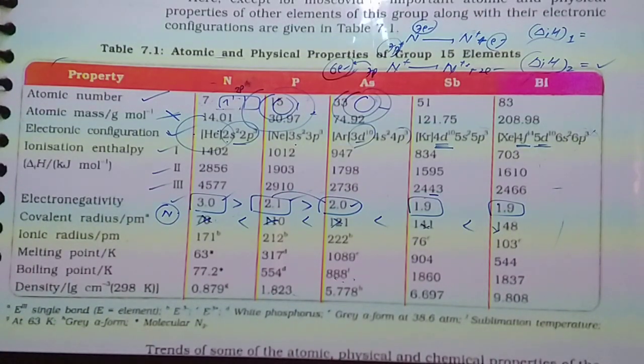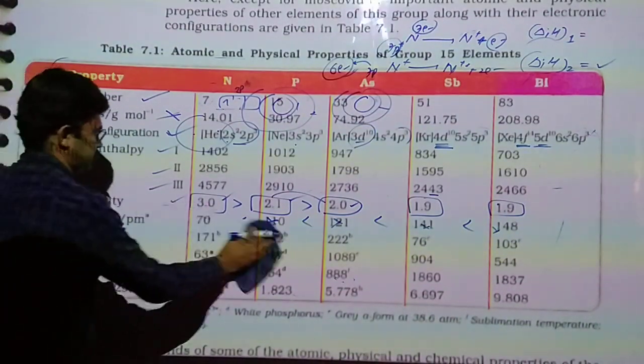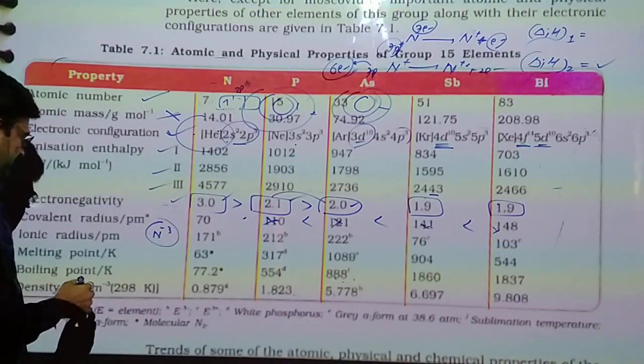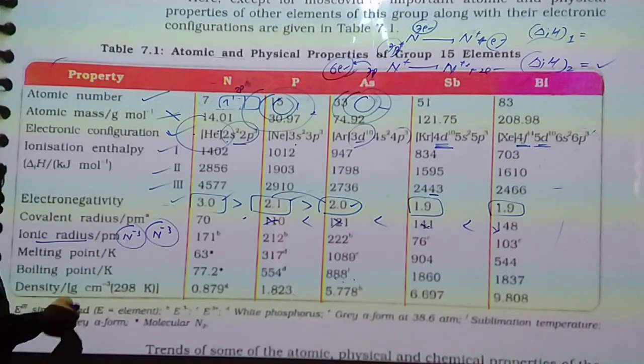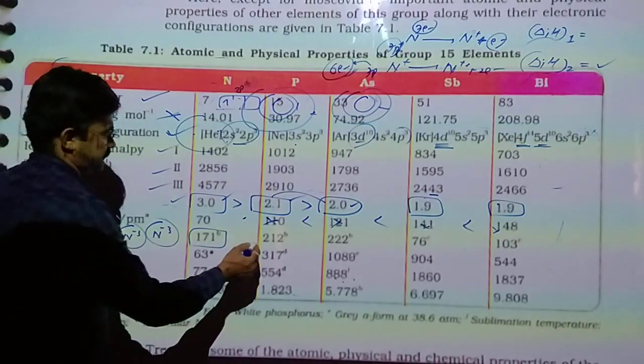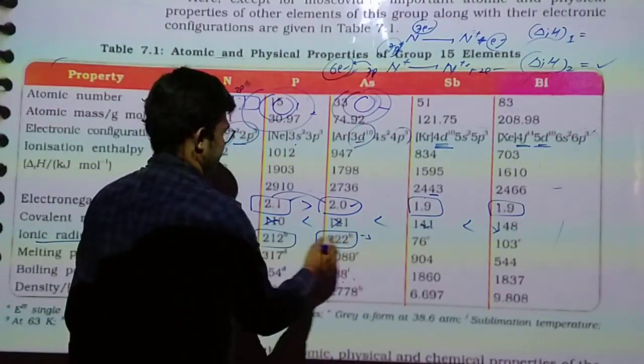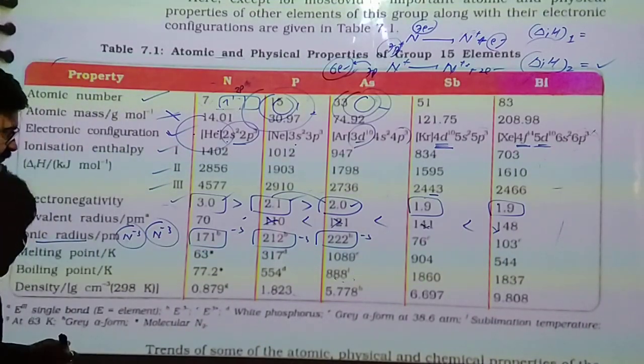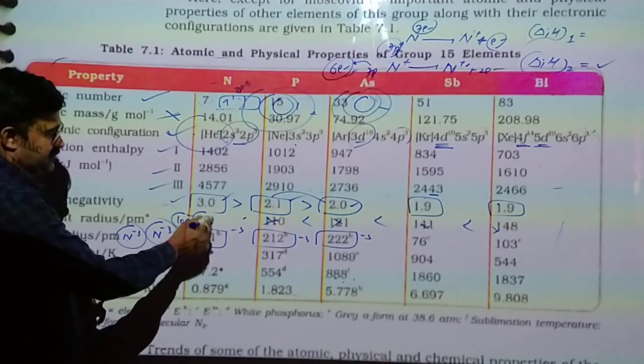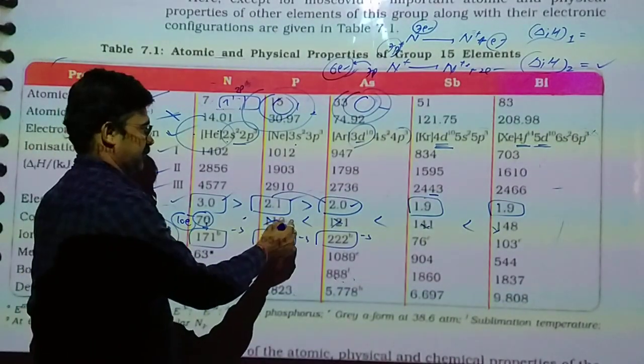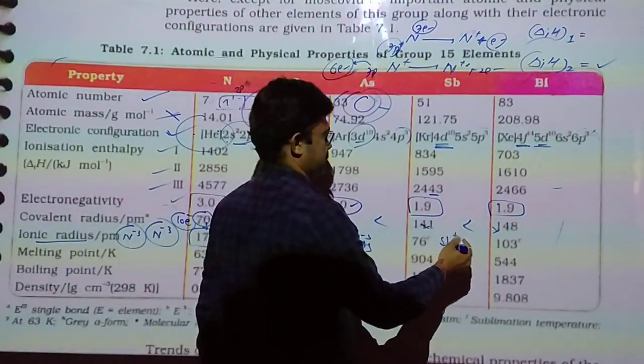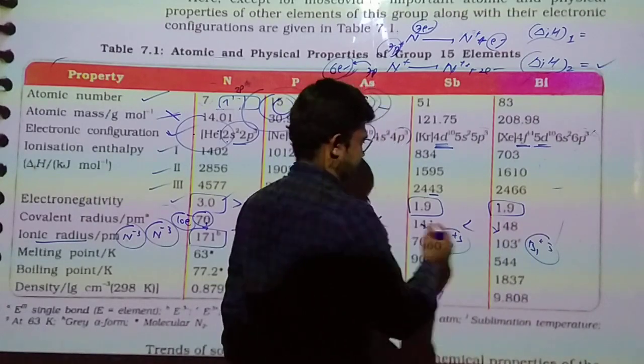Ionic radius in picometer. Nitrogen gains 3 electrons, outermost 3 gained. Here is 171, here is 212, here is 222. While arsenic and antimony, here is the ionic radius of positive ion. Here is the ionic radius of negative ion. In 7 electrons, 3 gained, the size is 171. Here loose. Here is the ionic radius of positive ion.